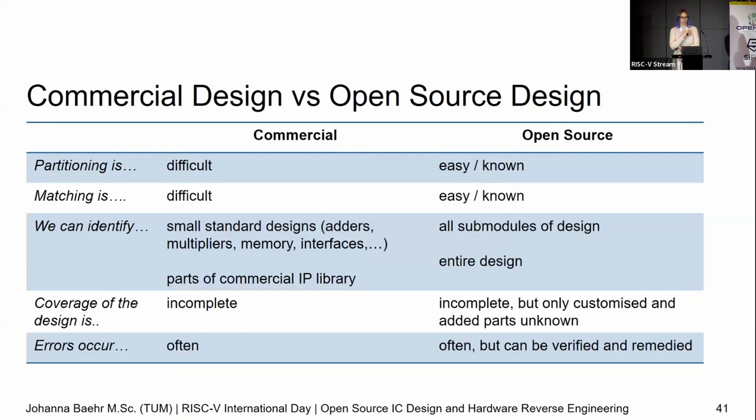I like tables, so I always do commercial versus open source. Partitioning for commercial is difficult — we don't know what we're expecting: five submodules, 100 submodules? In the open source use case, we know. We know the RISC-V has these modules, we know when we synthesize them they'll be approximately this big, and we can even test our methods — testing method X on our own implementation means it'll probably perform well on the one that came back from the foundry.